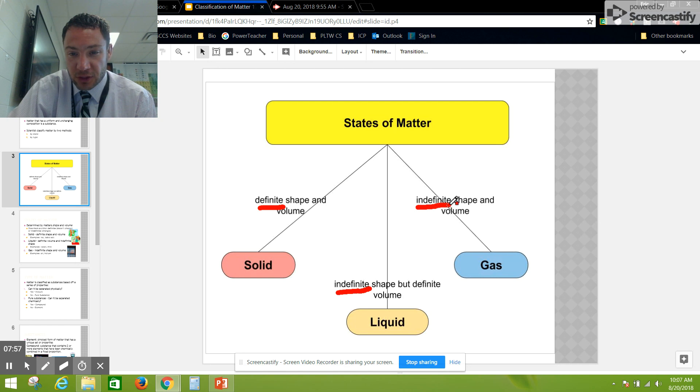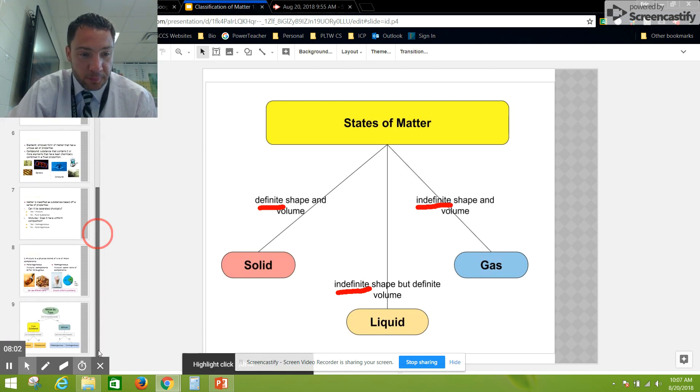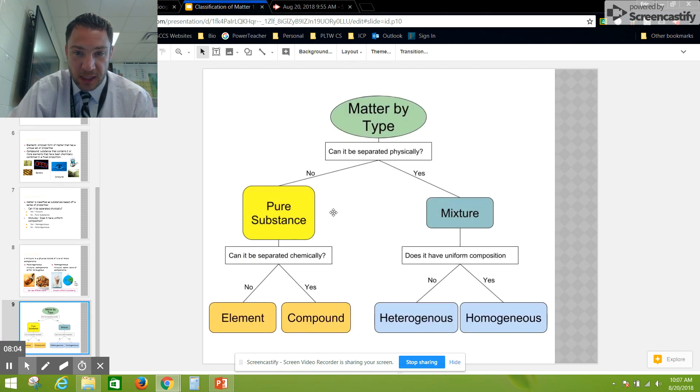On our concept map for type, you first ask: can the matter be separated physically? If yes, it's a mixture. If no, it's a pure substance. For pure substances, ask: can it be separated chemically? If yes, it's a compound. If no, it's an element. For mixtures, ask: does it have uniform composition? If yes, it's homogeneous. If no, it's heterogeneous.